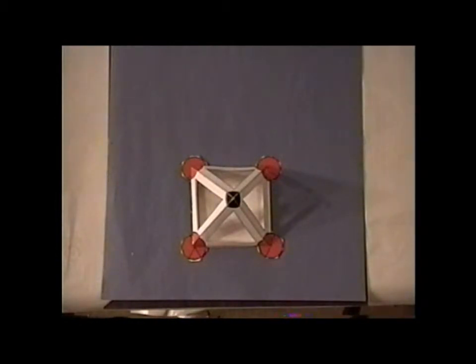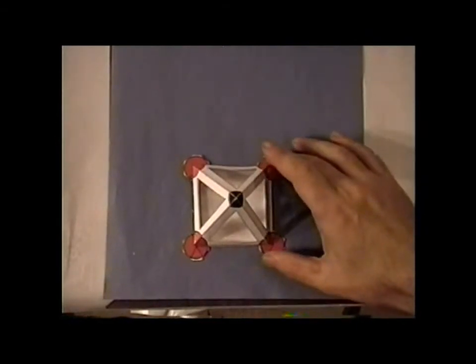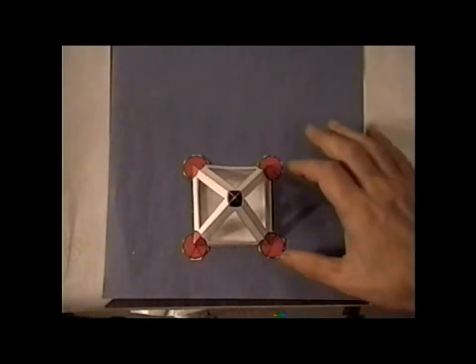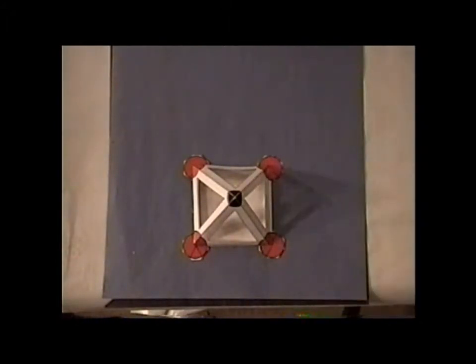Now, we would like to look at some of the chemically important subgroups of the group C4V. Here we see our reference C4V structure, square pyramidal. So now what we like to do is make some substitutions to the atoms, particularly at the base, and see to which new point groups we arrive.